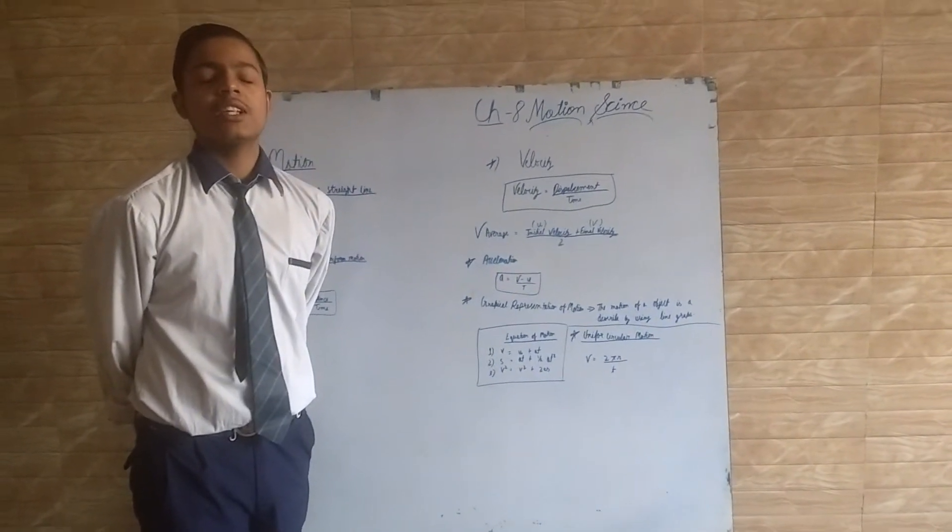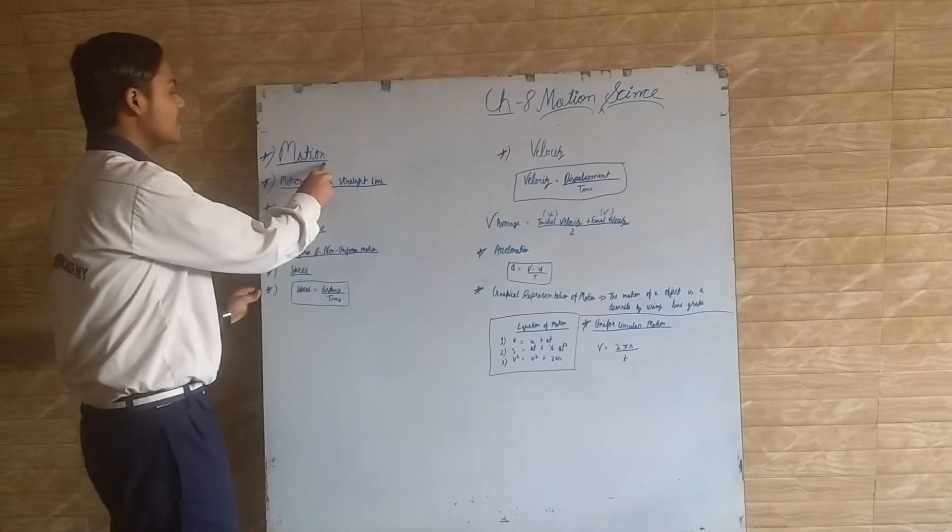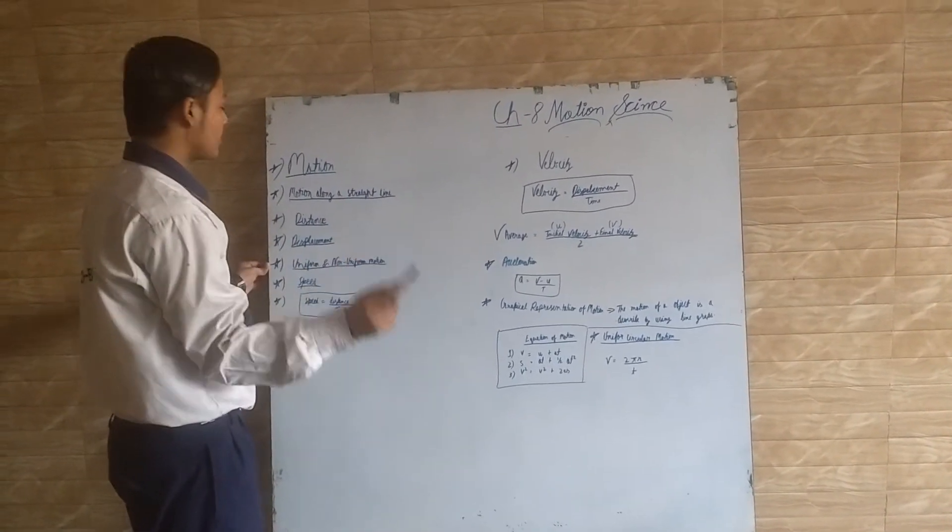Chapter 8: Motion in Science. Motion is defined as the change of position of an object with respect to time.